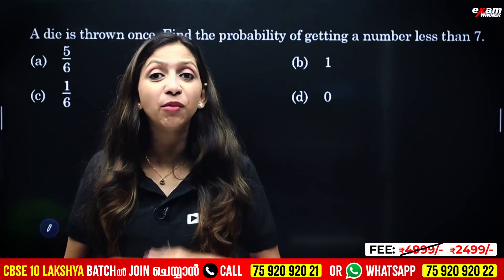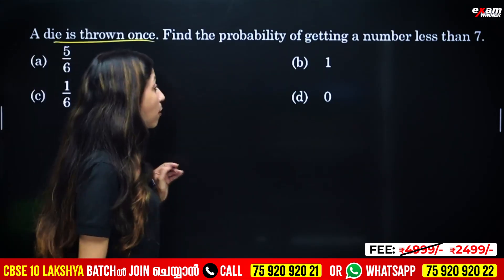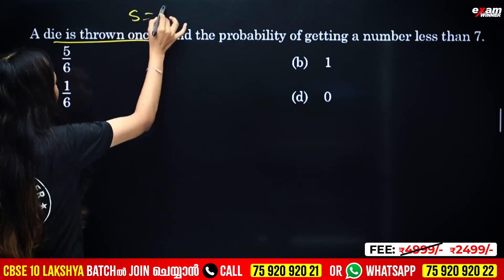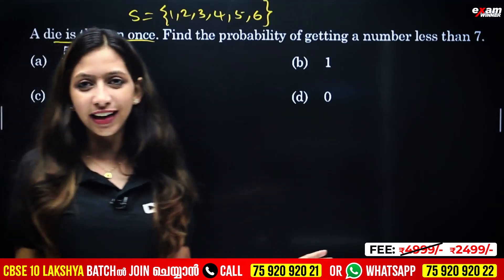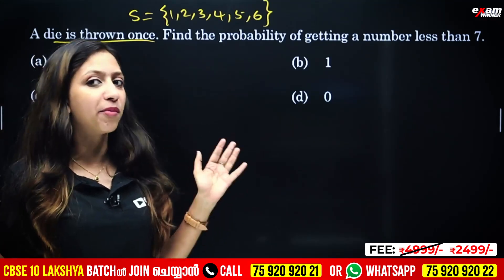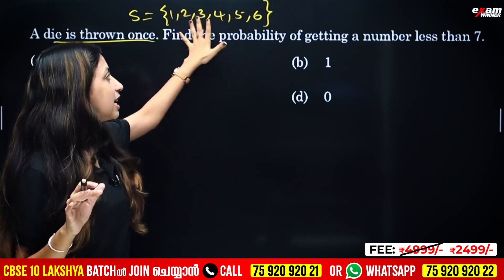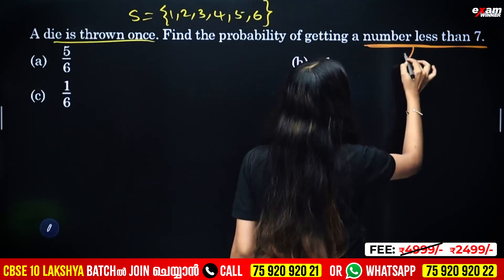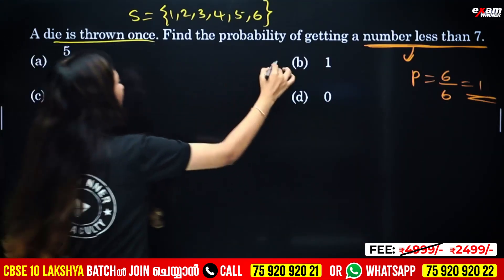Next question: the probability of getting a number less than 7. When one die is thrown, the sample space is {1, 2, 3, 4, 5, 6}. The total number of outcomes is 6. All numbers — 1, 2, 3, 4, 5, 6 — are less than 7, so all are favorable outcomes. Therefore, probability = 6/6 = 1.